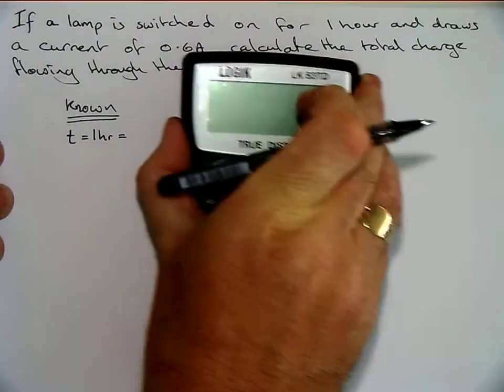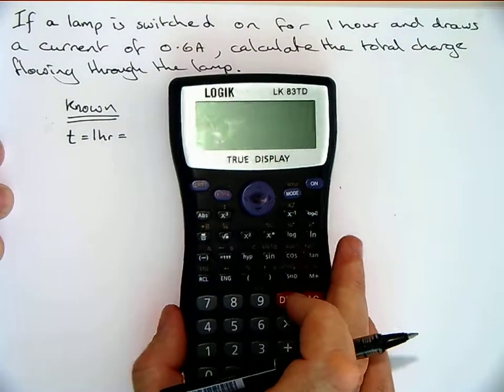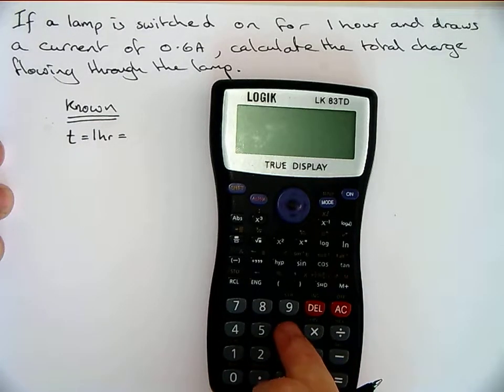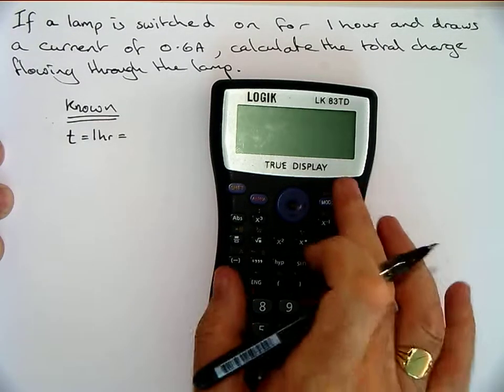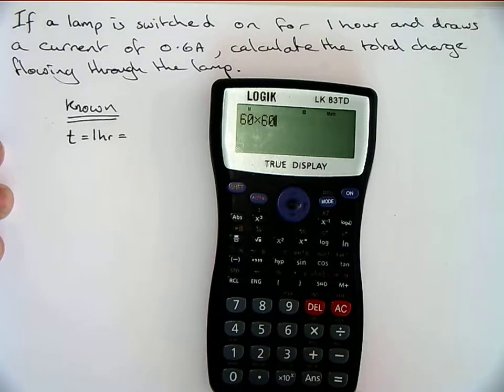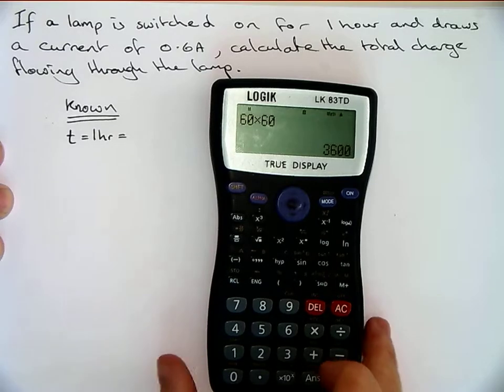Just to make sure you all follow what I'm doing with the calculator: it's 60 minutes an hour, and each minute is 60 seconds, so 60 times 60, which is 3600.